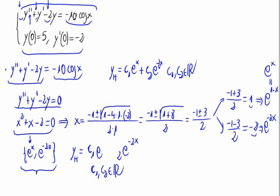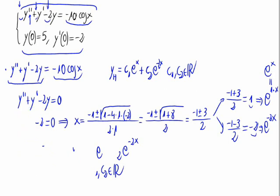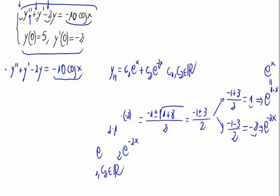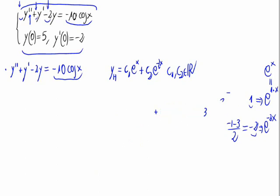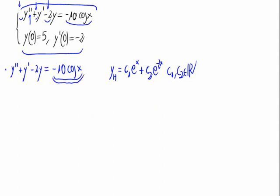Now that we have the solution of the homogeneous part, let's find the particular solution. On the right side of the equation we have a cosine function, so we look for a particular solution of the form y = a·cos(x) + b·sin(x), since we have a cosine in the given equation.